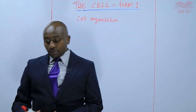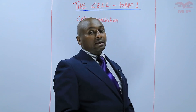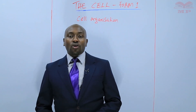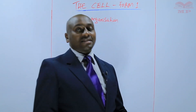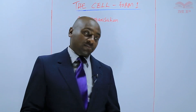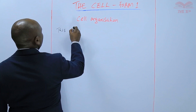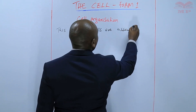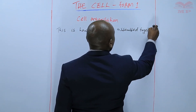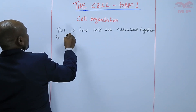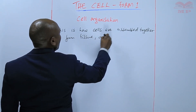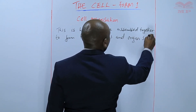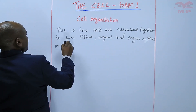Cell organization is how the cells are assembled together to form tissues, organs, and organ systems within the body of an organism — in living organisms.